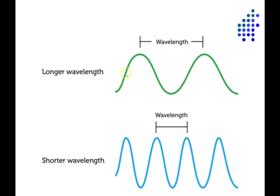For light, we're not talking about pressure waves in the air, as we are with sound, but rather electromagnetic waves — rapidly changing magnetic fields that propagate out from some source, like a light bulb or like the sun.